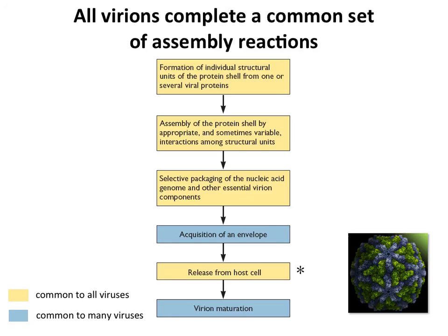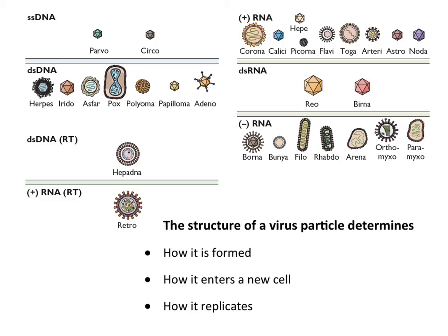Sometimes release occurs before maturation, or concomitantly, and sometimes maturation occurs first and then the virions are released. These steps can vary in their order. There are quite a few different kinds of virion particles, which we arranged into specific groups: icosahedral particles with or without an envelope, viruses with helical symmetry — all of which have envelopes among animal viruses. Just looking at the structure should tell you how it's assembled.